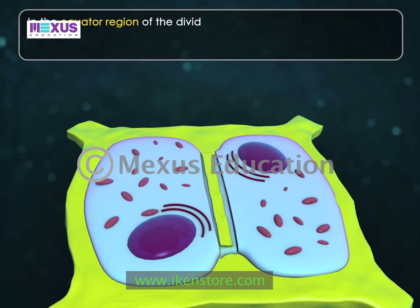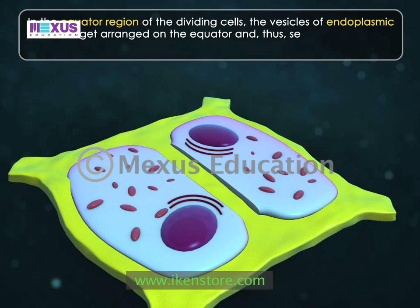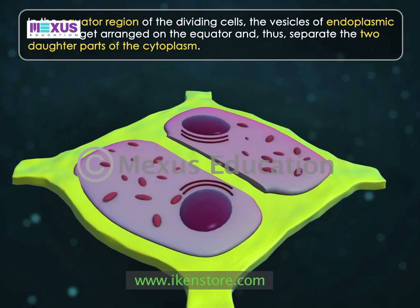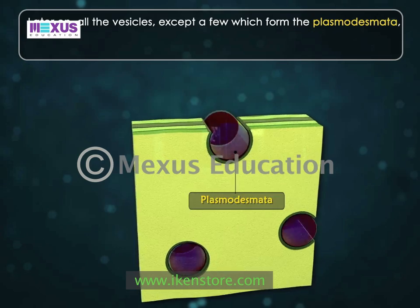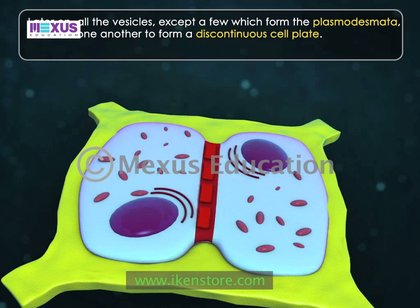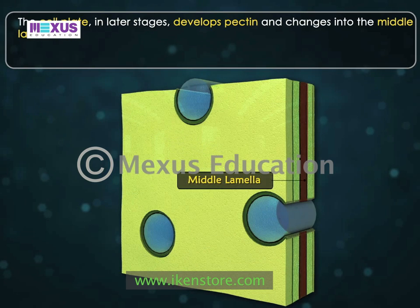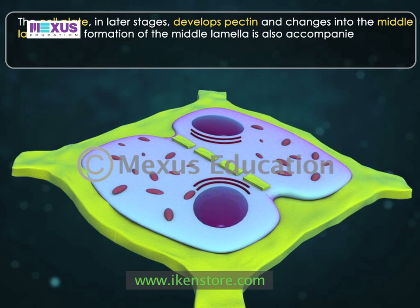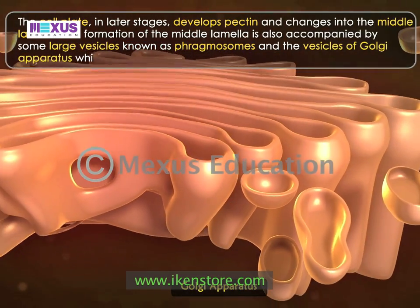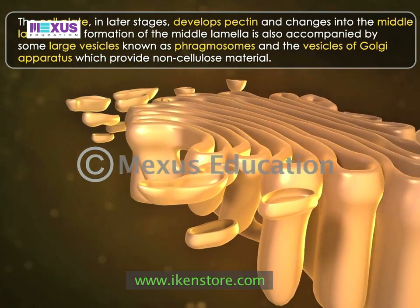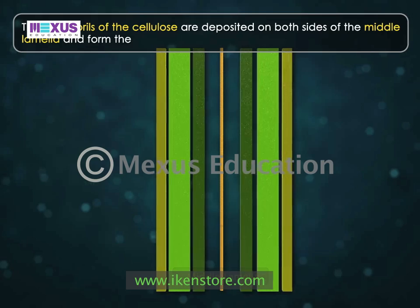In the equator region of the dividing cells, the vesicles of endoplasmic reticulum get arranged on the equator and separate the two daughter parts of the cytoplasm. Later on, all the vesicles except a few — which form the plasmodesmata — fuse with one another to form a discontinuous cell plate. The cell plate in later stages develops pectin and changes into the middle lamella.